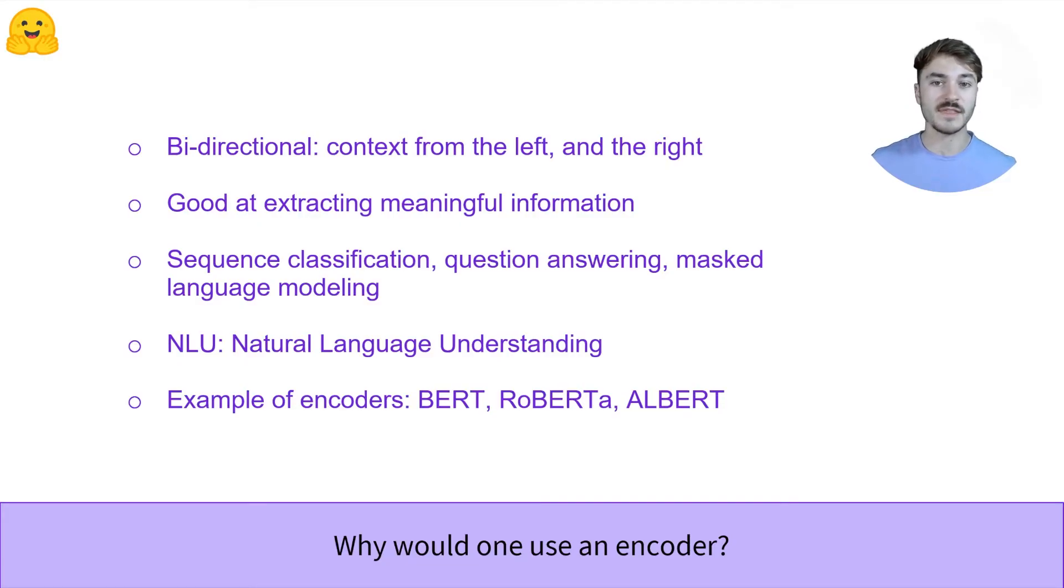At the time of release, it beat the state of the art in many sequence classification tasks, question answering tasks, and masked language modeling to only cite a few. The idea is that encoders are very powerful at extracting vectors that carry meaningful information about a sequence. This vector can then be handled down the road by additional neurons to make sense of them.